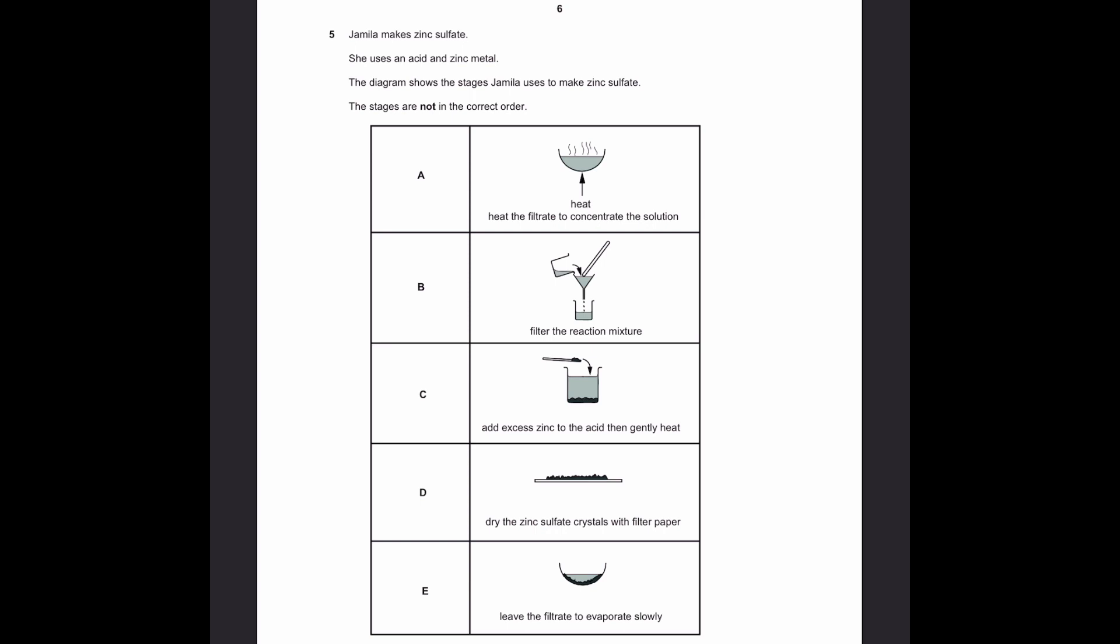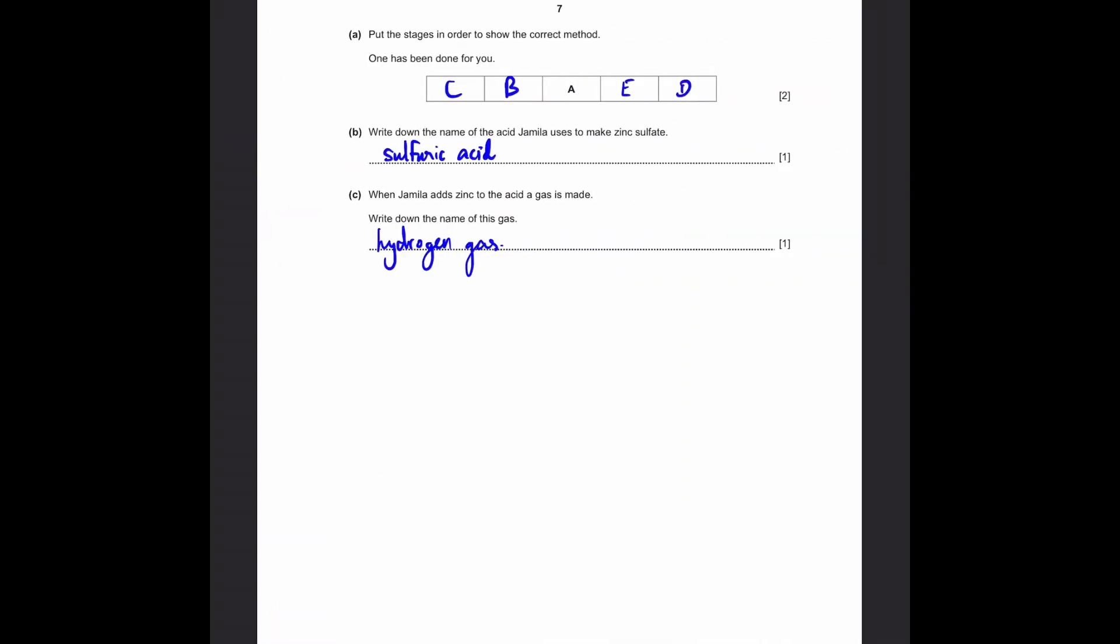And the third step is A. It's already given. It's heat the filtrate to concentrate the solution. This means that the filtrate will evaporate a bit. And also the particles inside the solution, the solute, will be more energized or will have more thermal and kinetic energy, which means it will become more concentrated. And next is E. You have to leave it to evaporate slowly. Only then you'll get crystals. And the last step is D. Dry the zinc sulfate crystals with filter paper. So, the order is C-B-A-E-D. That's what I've written here.